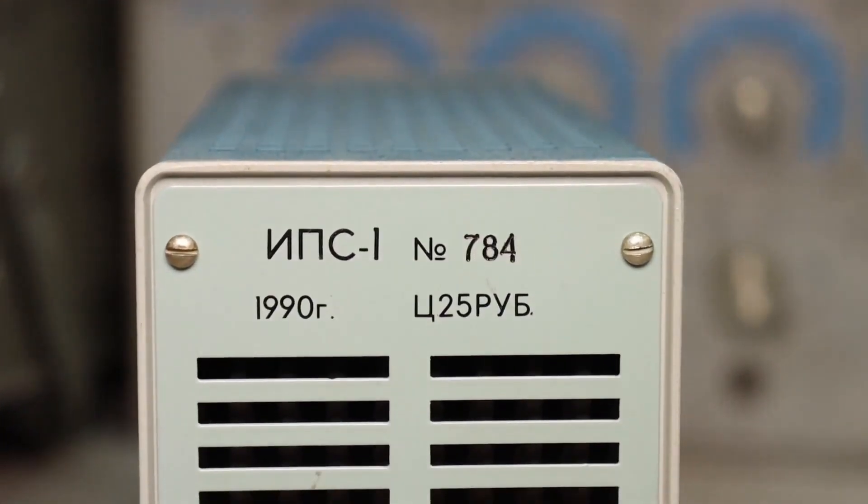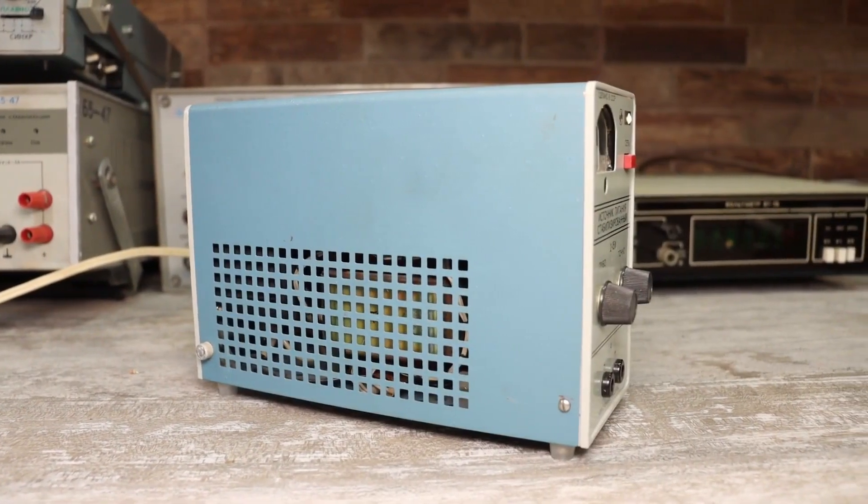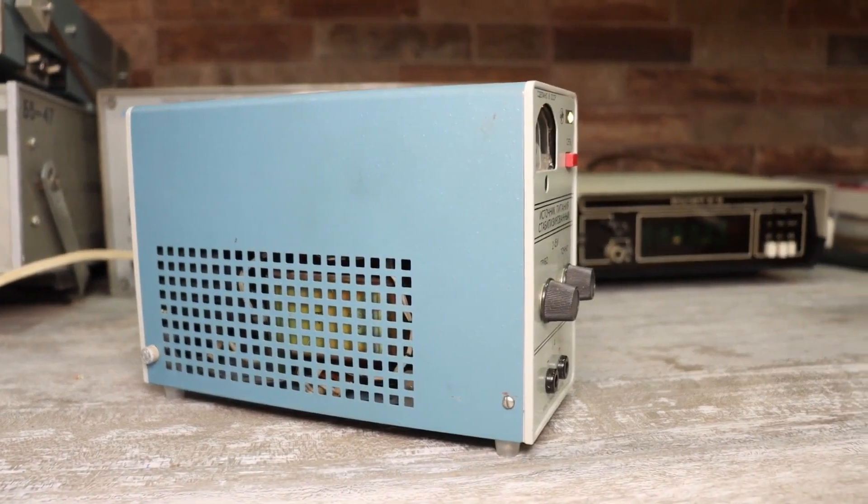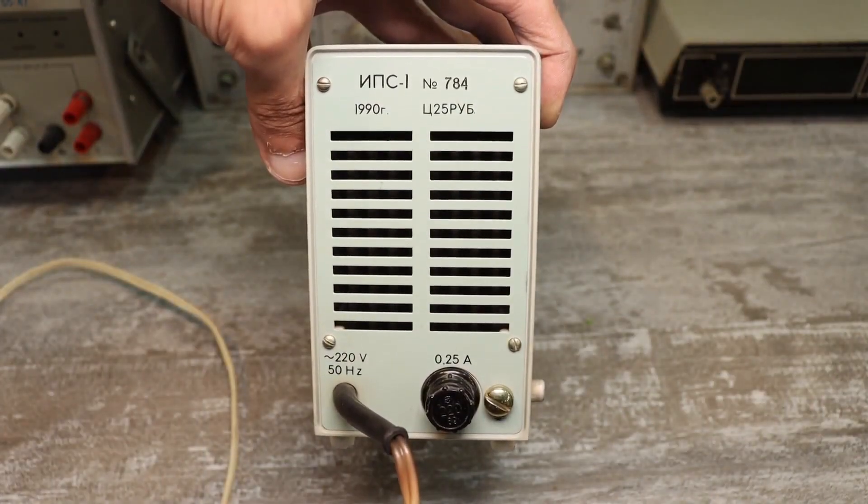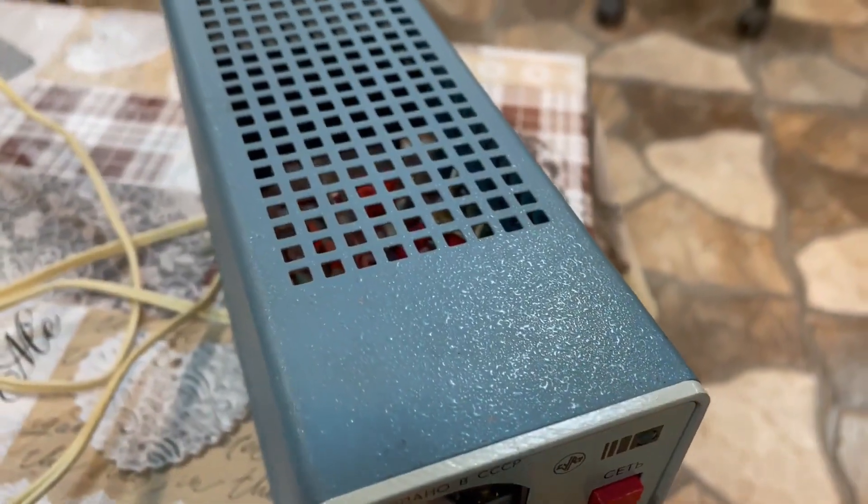The IPS-1 is a laboratory adjustable direct current power supply produced in the USSR. There was also the Mars power supply, and the IPS units themselves could have minor differences, particularly in appearance.